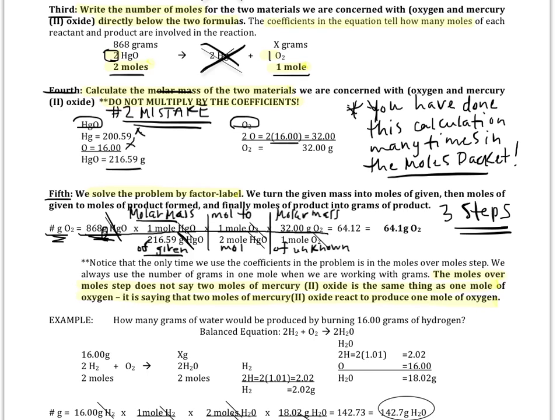It's not enough in this packet anymore to just write grams and moles, because this factor label problem is going to have grams and moles of mercury oxide, but later it's going to have grams and moles of oxygen. So, you have to write the formulas in. One, because you'll lose points on the test if you don't, and two, in my opinion, more importantly, you'll get yourself confused, and you'll put numbers in the wrong places, top versus bottom of your fractions if you don't.